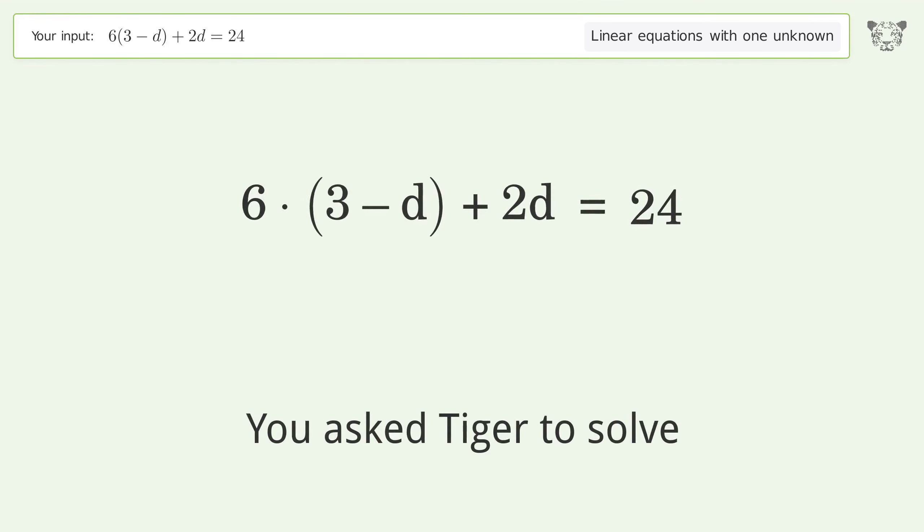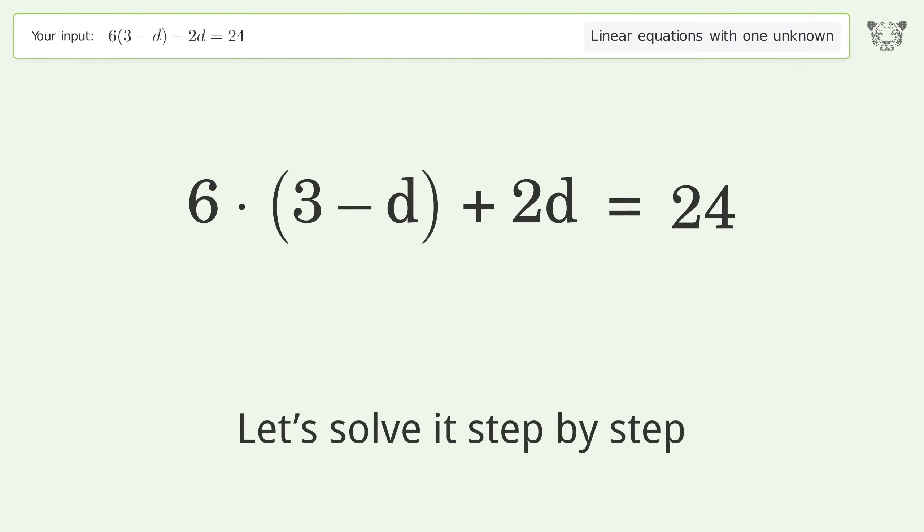You asked Tiger to solve this. This deals with linear equations with one unknown. The final result is d equals negative 3 over 2. Let's solve it step by step.